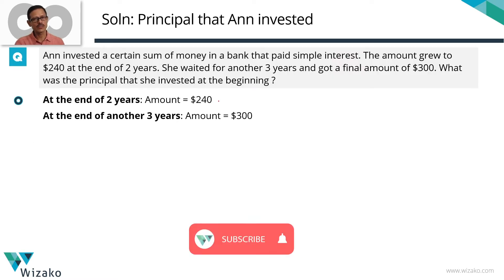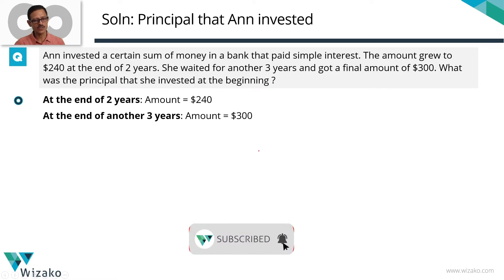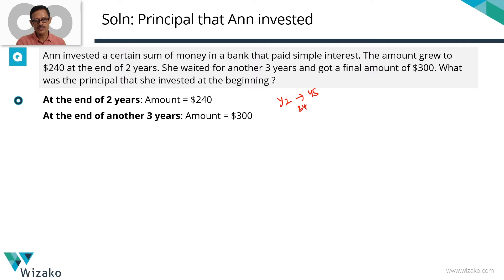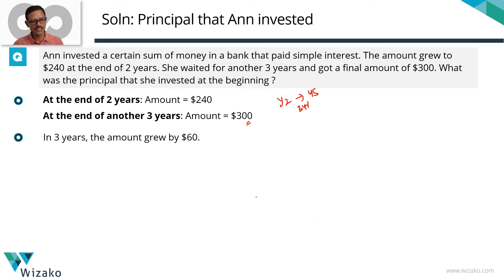At the end of 2 years it was $240, and at the end of 5 years this became $300. So between year 2 and year 5 — over those 3 years — she earned an interest of 300 minus 240, which is equal to $60.